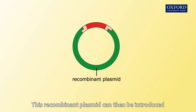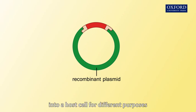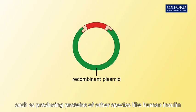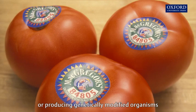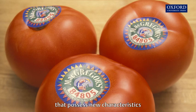This recombinant plasmid can then be introduced into a host cell for different purposes, such as producing proteins of other species like human insulin, or producing genetically modified organisms that possess new characteristics.